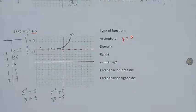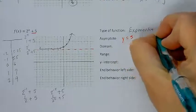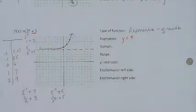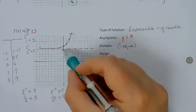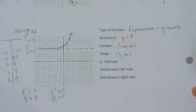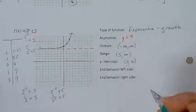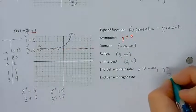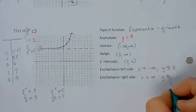This one is exponential, and it's a growth because of the 2. The domain is still negative infinity to infinity, but because the asymptote is up at 5, our range is going to change and go from 5 to infinity. The y-intercept also changes — it's at (0, 6). The end behavior on the left side: as x approaches negative infinity, y approaches 5. And as x approaches infinity, y approaches infinity.